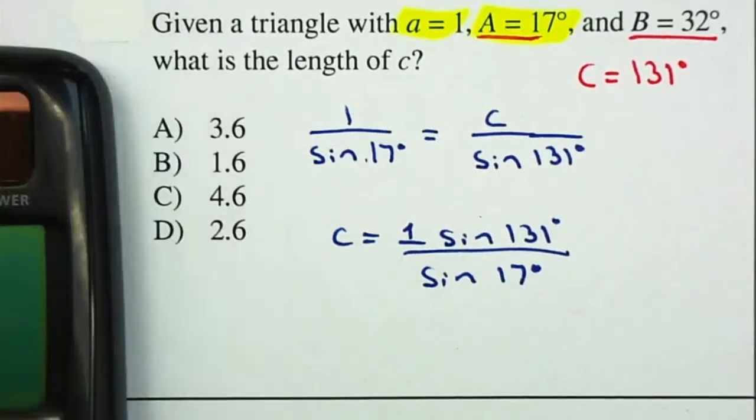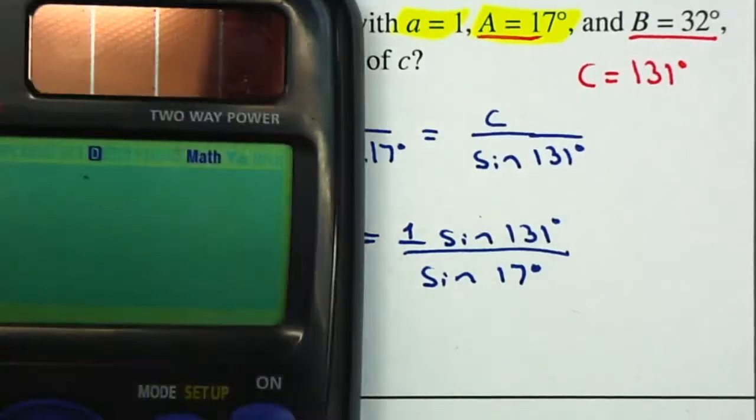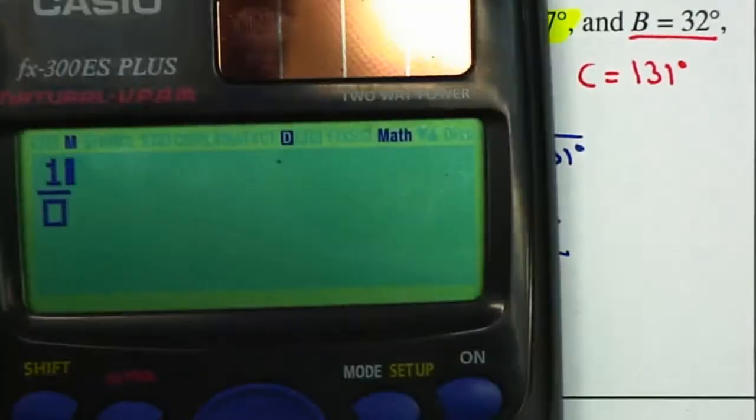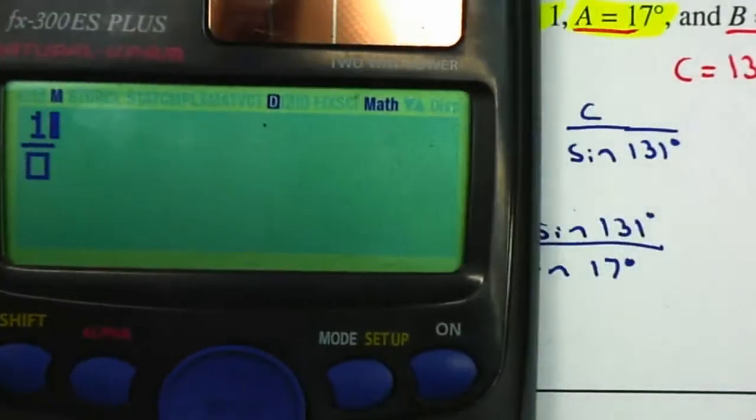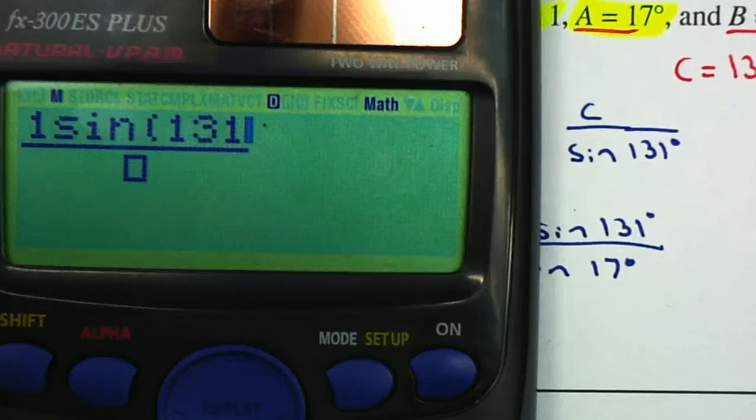Remember that you want to make sure that you calculate in degrees and not radians. Now I'm going to type it into my calculator. I'm going to use my fraction bar, 1, and I really don't need the 1, multiplied by the sine of 131, divided by the sine of 17 degrees.